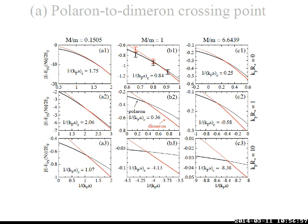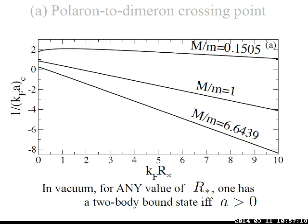When the resonance is wide the crossing point is at 0.84; as the resonance becomes narrow the crossing point moves to the left, and when very narrow it becomes negative. Plotting the crossing point as a function of kF R star, for all mass ratios the crossing moves towards negative values of the scattering length. This means that when R star becomes larger the system prefers to make a dimeron phase.